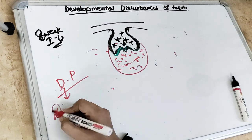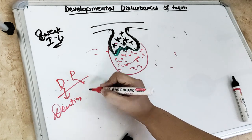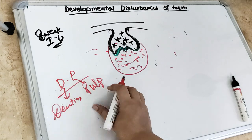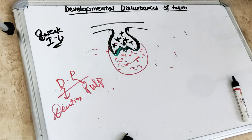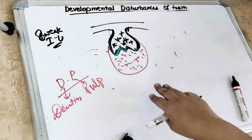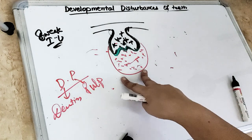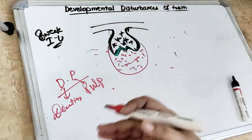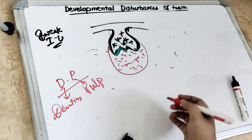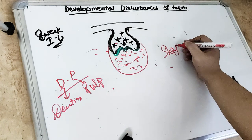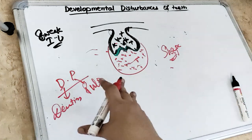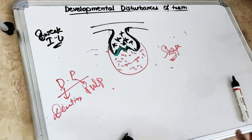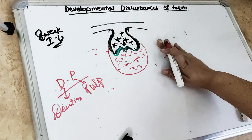The dental papilla — DP — D for dentine, P for pulp. This dental papilla gives rise to dentine as well as pulp. The dental follicle is the sac surrounding it. Any abnormality related to joining of teeth — fusion, germination — basically affecting shape will occur at this cap stage.